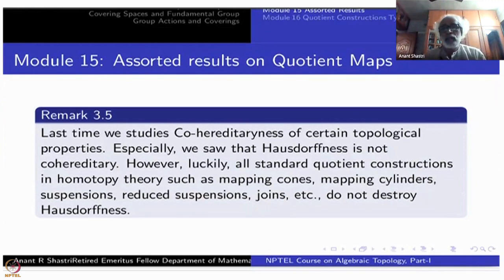especially our concern was about Hausdorff-ness which is a part and parcel of the assumptions in algebraic topology. And we saw that Hausdorff-ness is not co-hereditary and it is not all that easy hypothesis also we need to have so that the quotient is Hausdorff. Therefore, quite often, case by case, we will have to check whether something is Hausdorff or not.